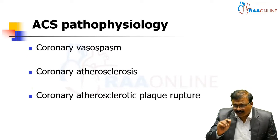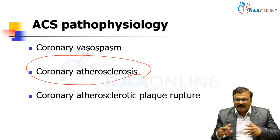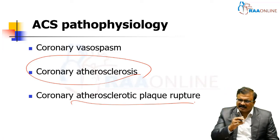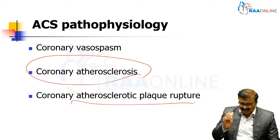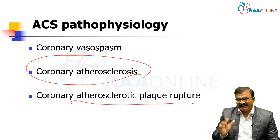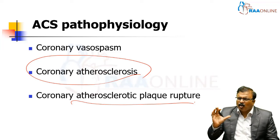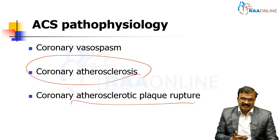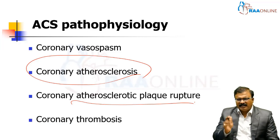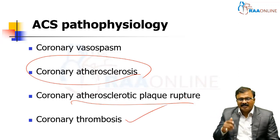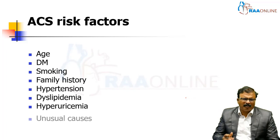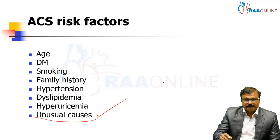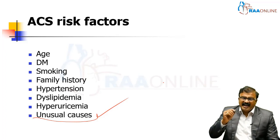Pathophysiology: coronary atherosclerosis is very important. Atherosclerosis is the initial stage, followed by plaque rupture. Coronary vasospasm — Prinzmetal angina — is classically seen in drug addicts, especially cocaine users. The symptoms are almost like MI and ECG shows ST elevation. Coronary thrombosis follows atherosclerotic plaque rupture. Risk factors include modifiable and non-modifiable factors, but an unusual cause is inflammation, which you can work up for using high-sensitivity CRP.